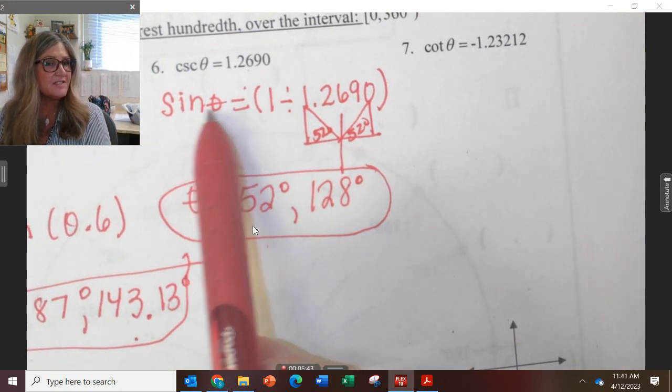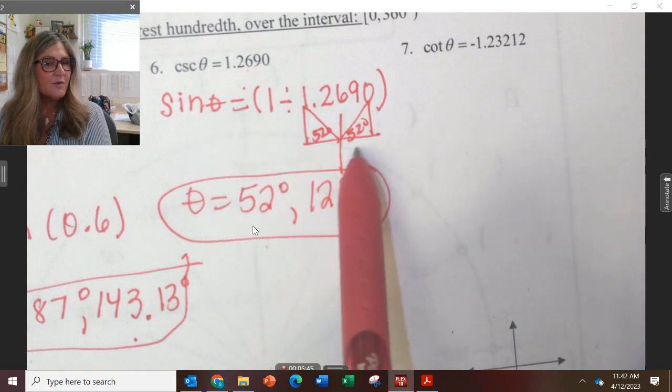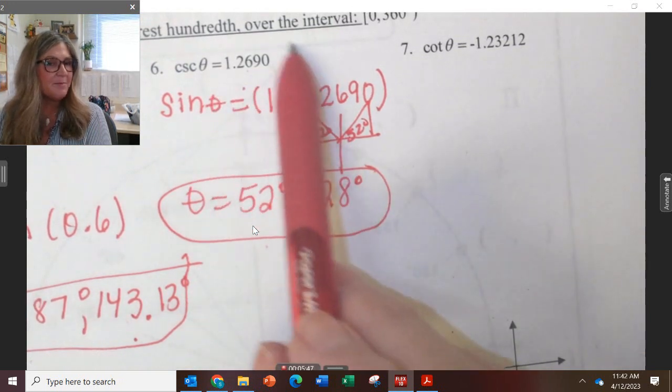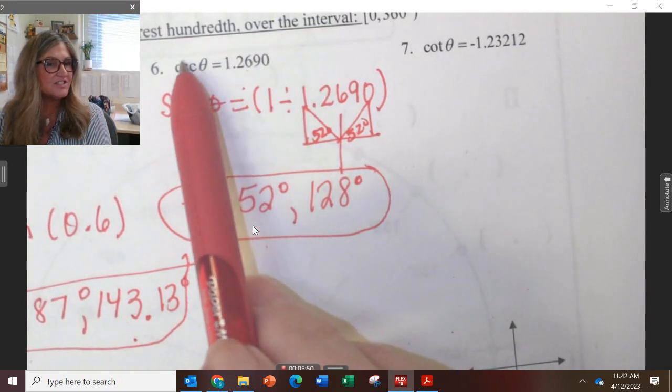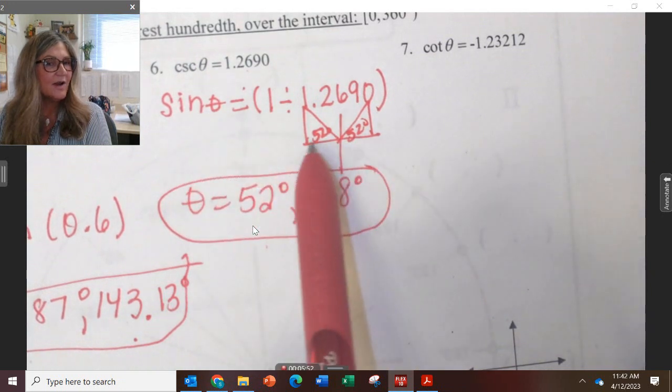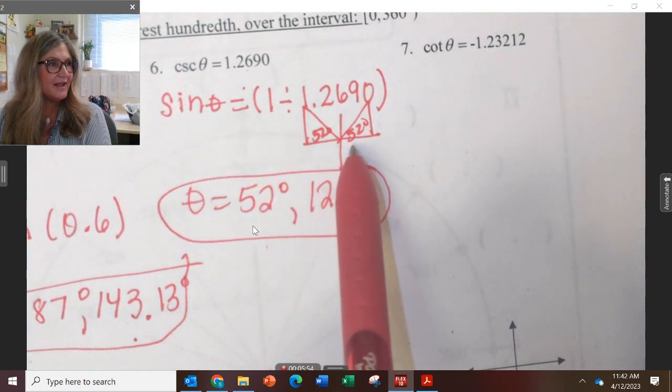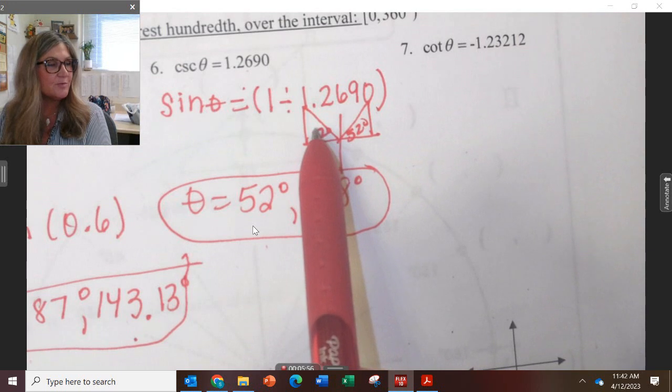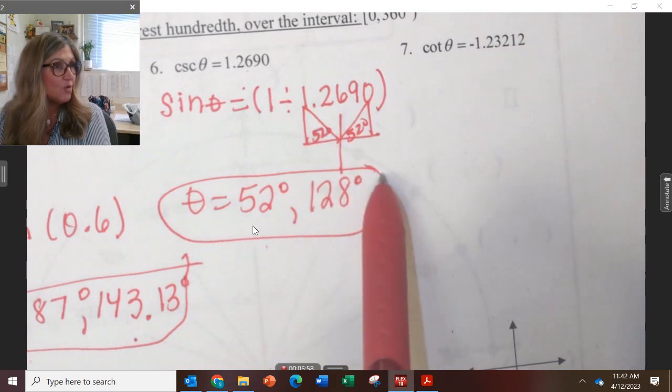What if it had been cosine? Where would I have put the angle if I had a positive ratio and it were secant or cosine? Where would I then have to put the other angle? Not in quadrant 2, but in quadrant 4.